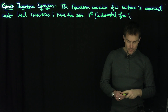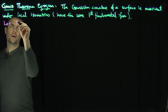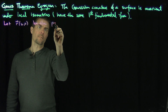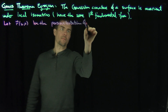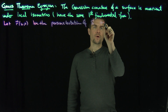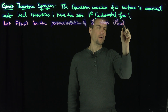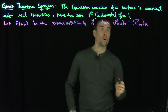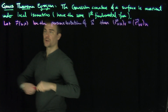What we're going to do is the following. Let R(u, v) be the parameterization. Then we know that R_UUV is equal to R_UVU. So I'm going to express this in terms of the Christoffel symbols.